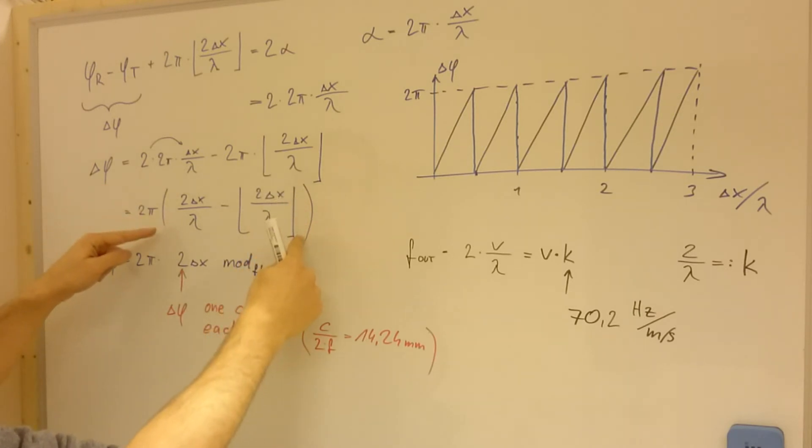I would say we can call this somehow a modulo operation for floating point numbers, and so we can write it as 2 pi radians times 2 delta x. Most important here is that we have a factor of 2, so delta phi makes one cycle for each half lambda, which is in our case every 14.24 millimeters.